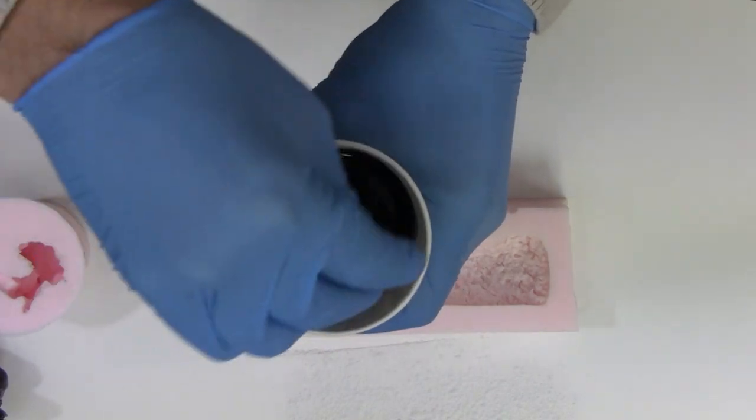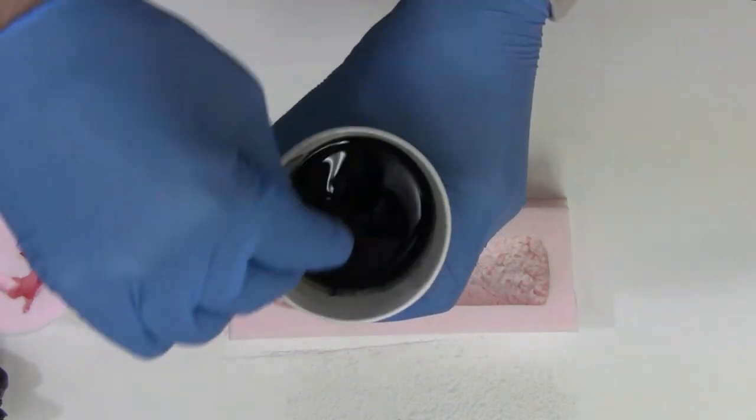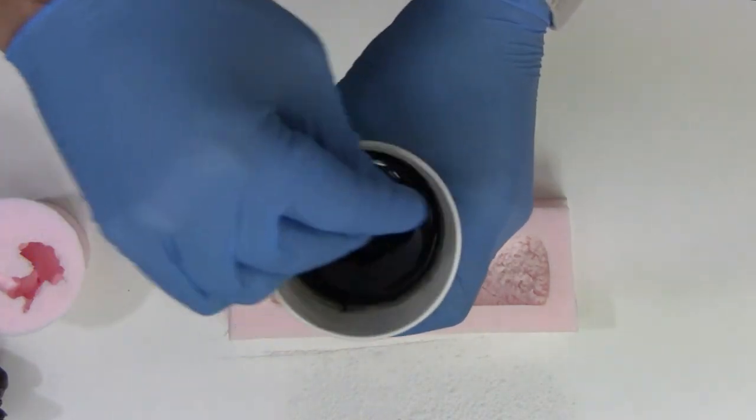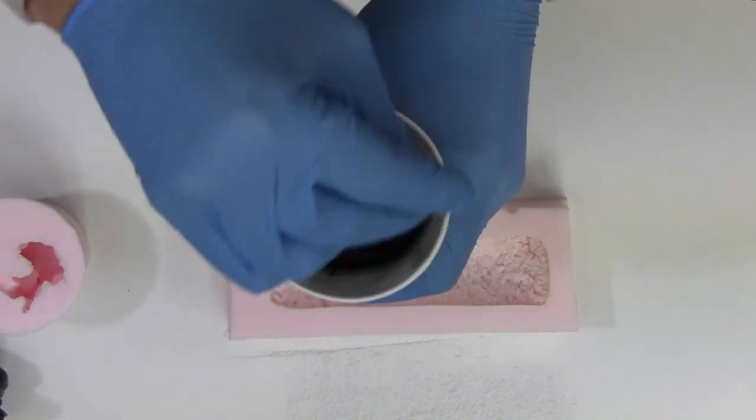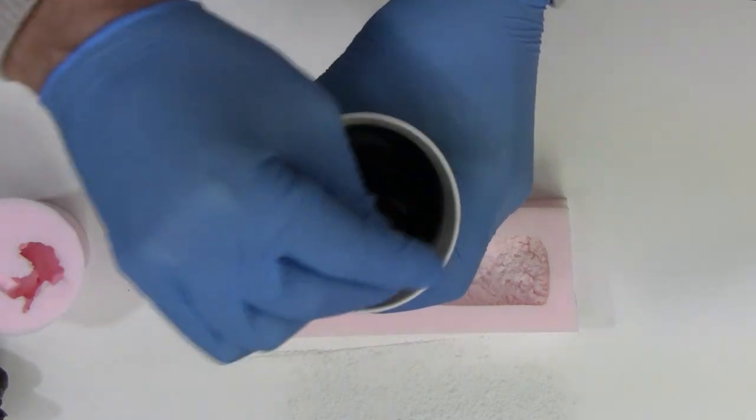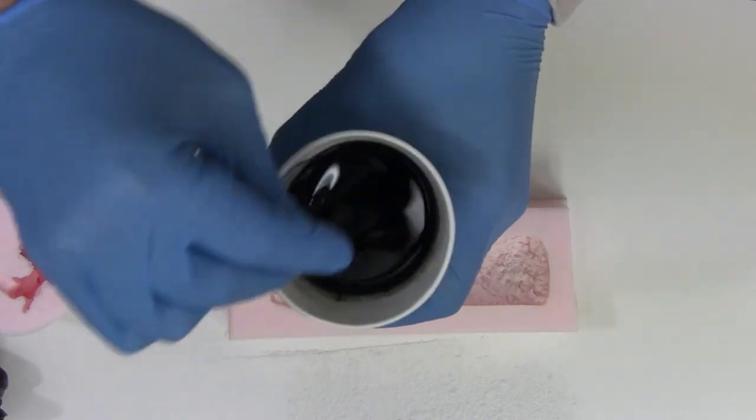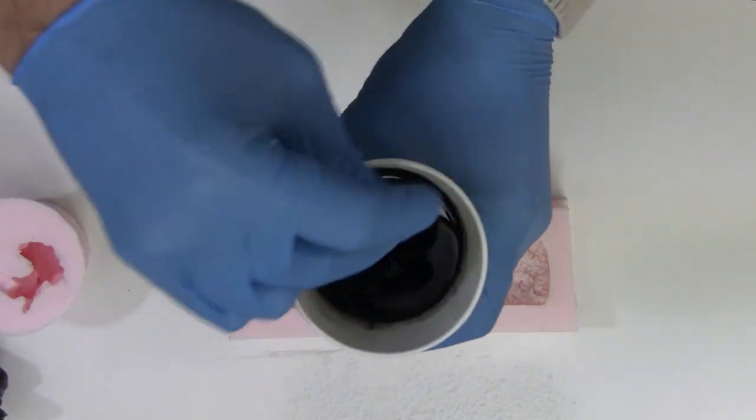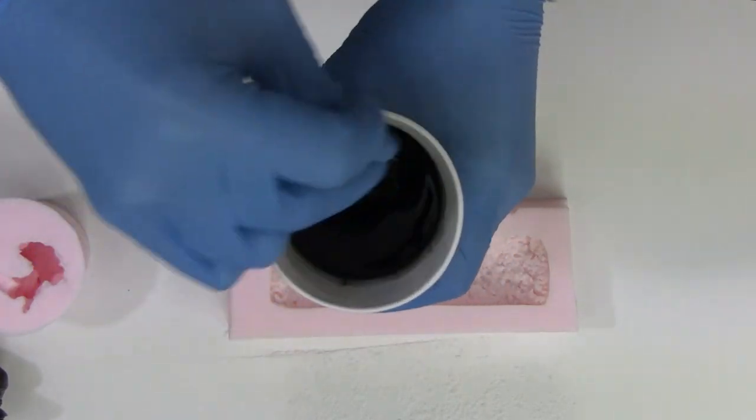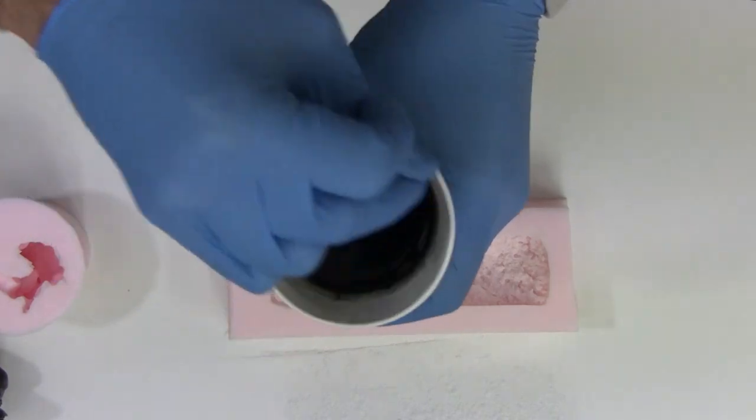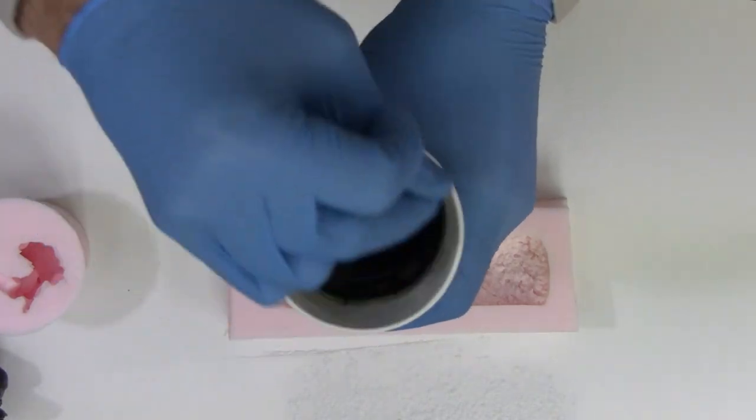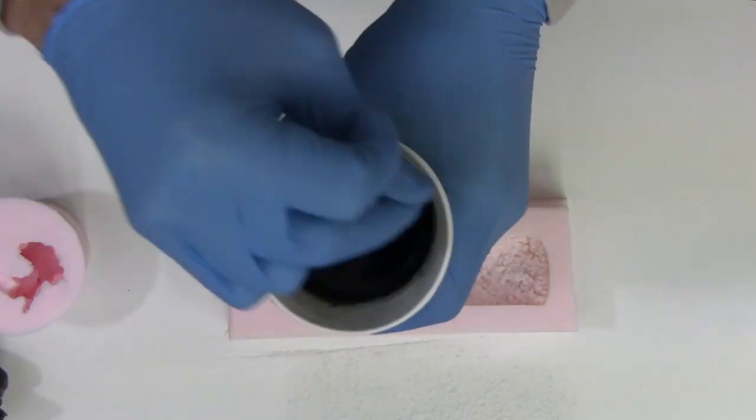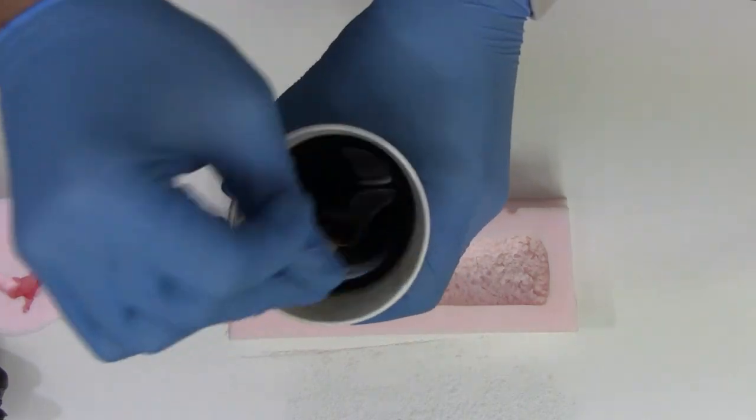Alumilite resins are pretty thin so they mix pretty nicely. You don't have to mix them real fast. You've got a little black dye here to mimic coal for a coal load. As soon as you have it thoroughly mixed, we can move to the mold to cast our part.